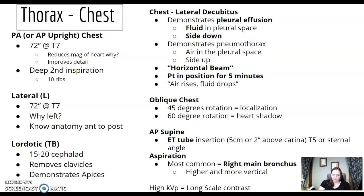We're looking for TB. We're going to use a cephalad angle to remove the clavicles — we're looking at the apices. Go back and review decubitus chest x-rays. Why do we do them? We're looking for pleural effusion — fluid.